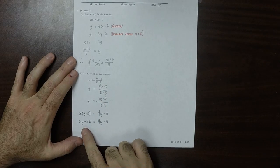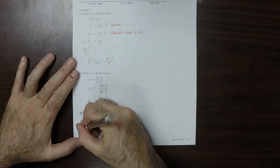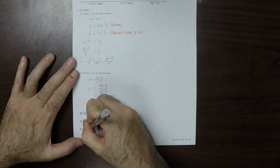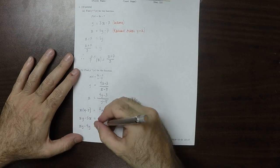Now I'll collect all the terms with y on the left, all those without on the right. So that would be xy minus 4y is 5x minus 3.